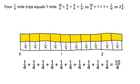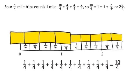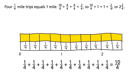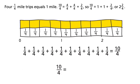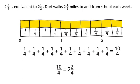Four one-fourth mile trips equals one mile. Ten-fourths equals four-fourths plus four-fourths plus two-fourths. So ten-fourths equals one plus one plus two-fourths, or two and two-fourths. Two and two-fourths is equivalent to two and one-half. Dory walks two and one-half miles to and from school each week.